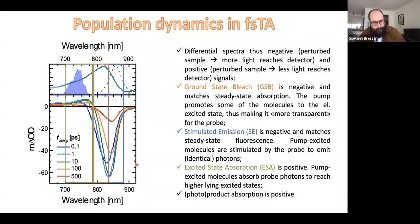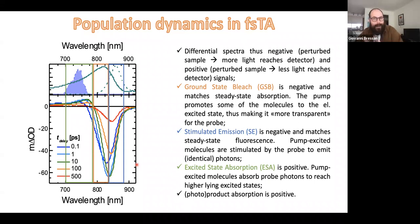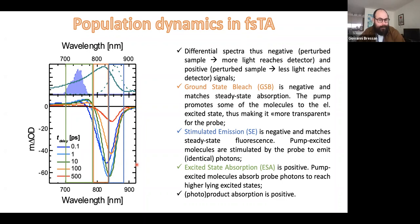Moving to the red, to the right side in the wavelength domain, we have another region with negative signals called stimulated emission. The pump excites the sample, the probe sees an excited state, and stimulates that excited state to decay back to the ground state, emitting an identical photon — so we have more light reaching the detector, and the signal is negative. Moving to the blue, in the green rectangular region, we have positive signals called excited state absorption. This doesn't have a steady-state correspondence; it's the excited state prepared by the pump, which is further excited to higher energy excited states by the probe. If the first pulse triggers a chemical reaction and produces a photoproduct, that also produces a positive signal.